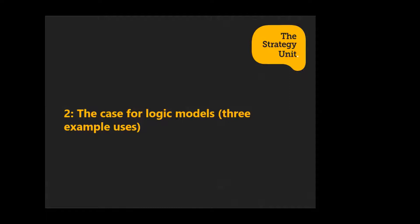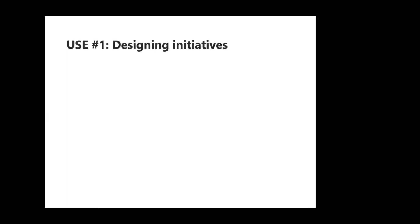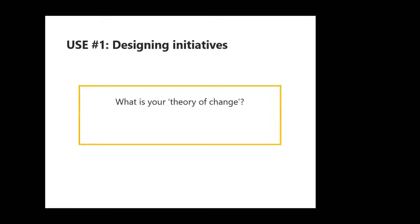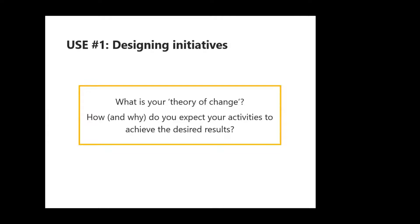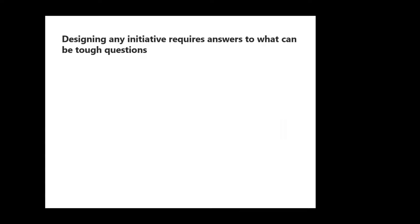The first of three example uses is in designing initiatives. The use of the logic model can be incredibly powerful in aiding the design of schemes, initiatives, services, and policies — just by asking some quite simple questions. First: what's your theory of change? How and why do you think the activities you're planning will achieve the results you desire? It's an incredibly simple but powerful starting point at the beginning of initiatives.